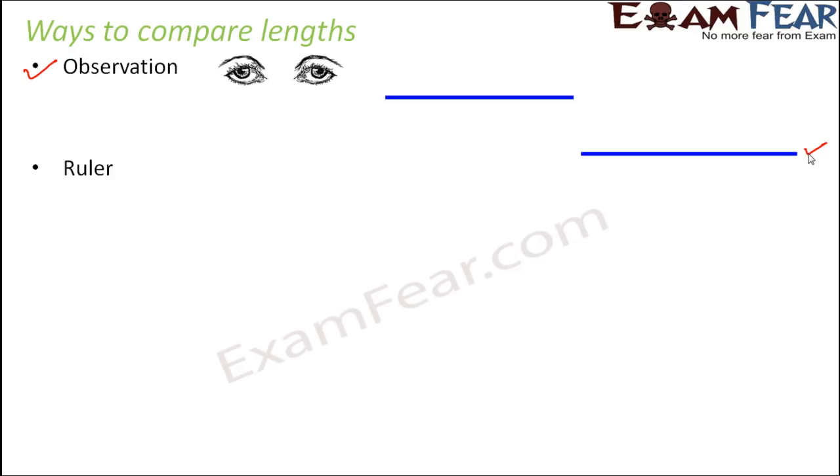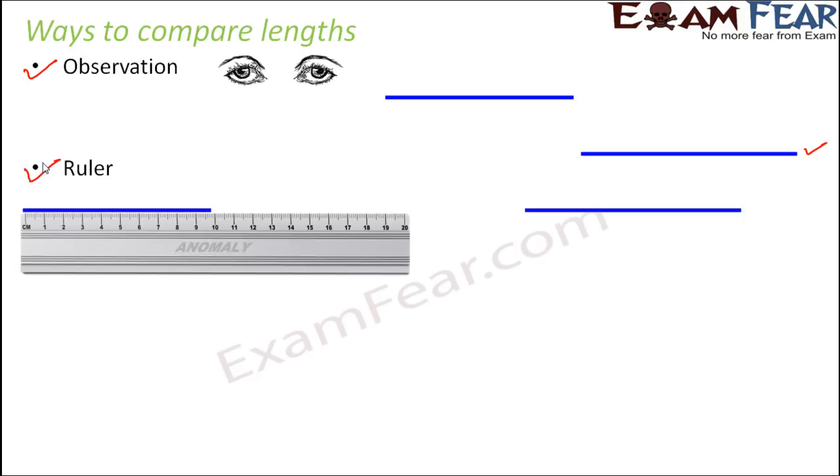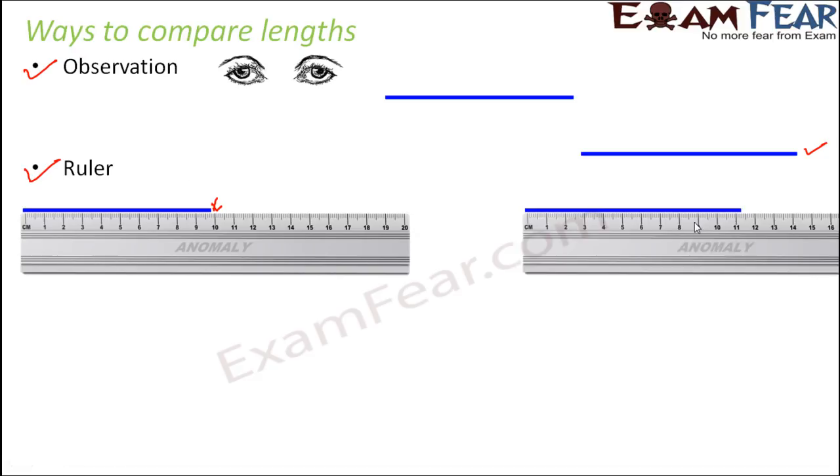And the second approach is to use a ruler, like what we did in the previous slide. So how will the ruler help? Here, even if you have two comparable line segments, using the ruler you can precisely look at its length. For example, here the length is approximately 10 centimeters.